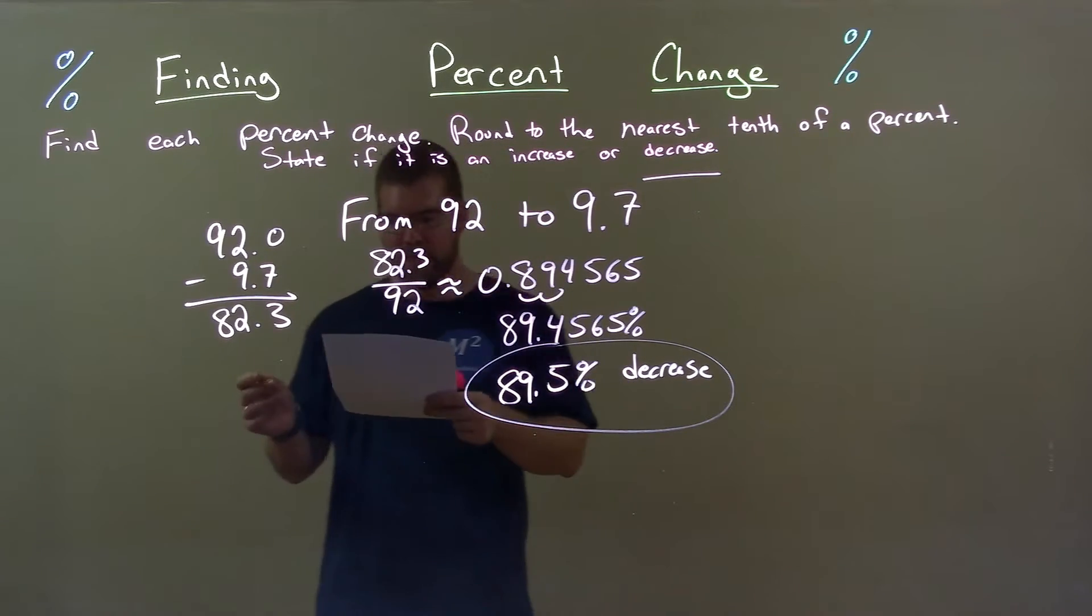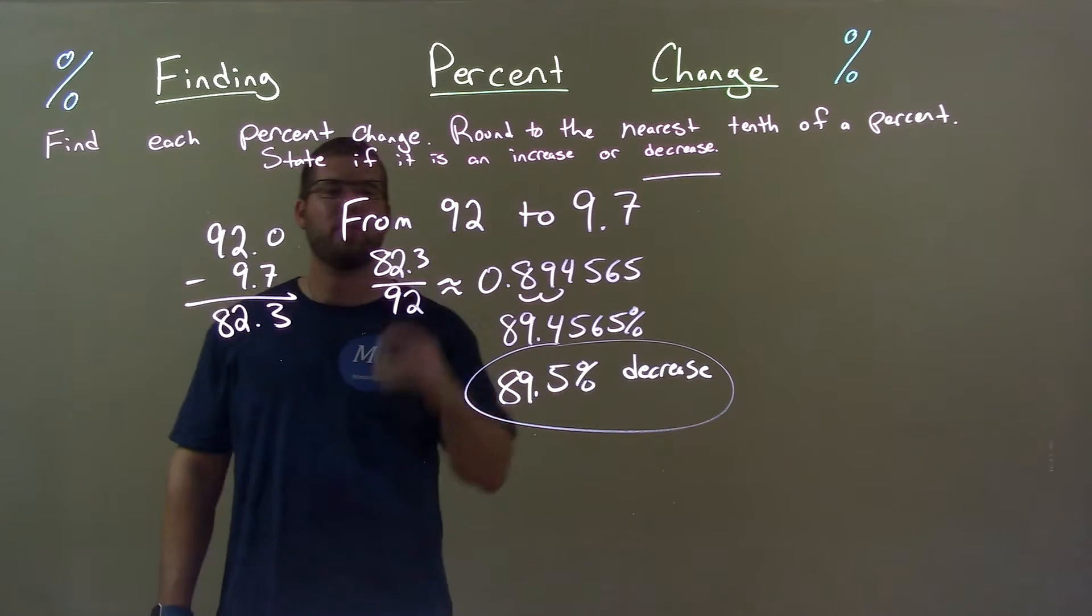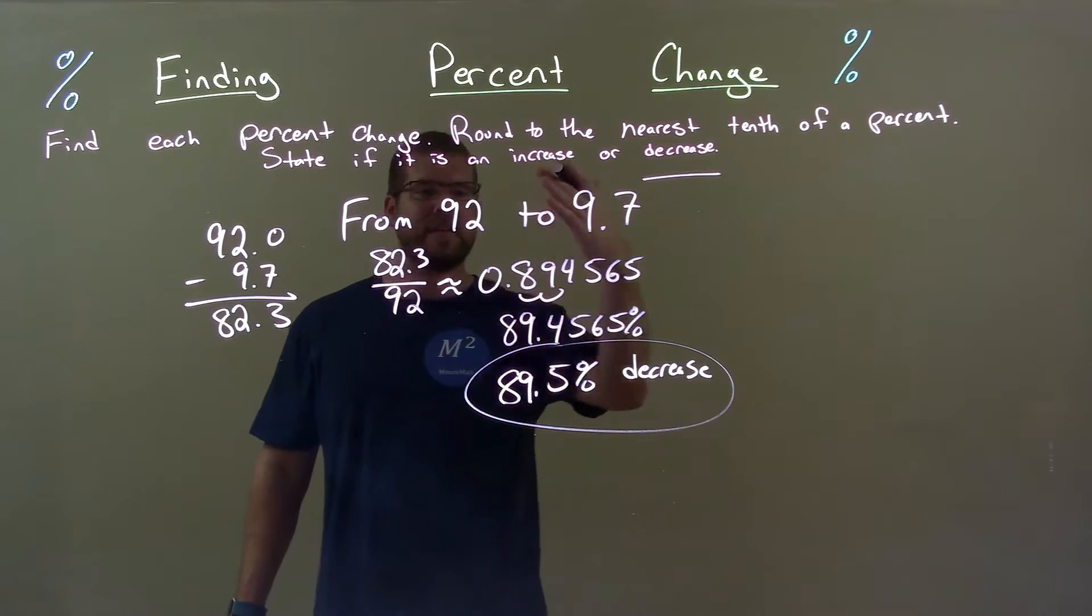Quick recap. We're given from 92 to 9.7 and we have to find the percent change. Well, that's a decrease. Got it.